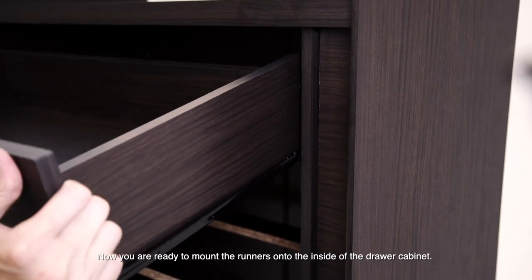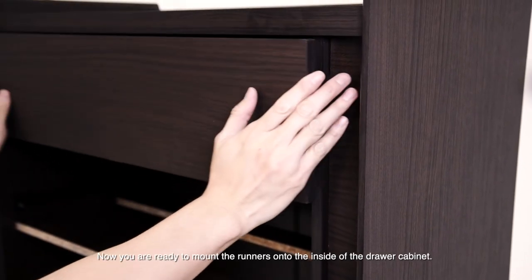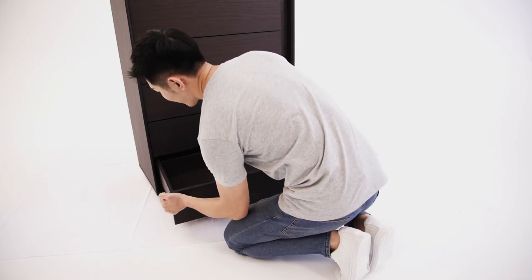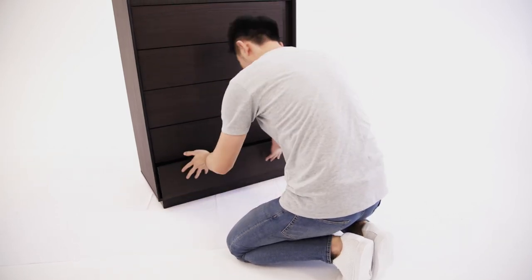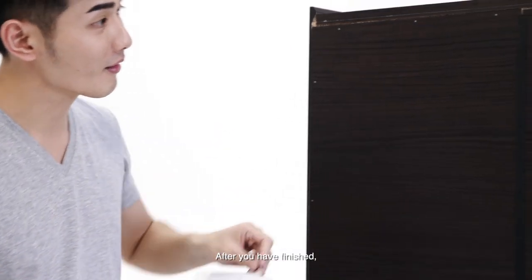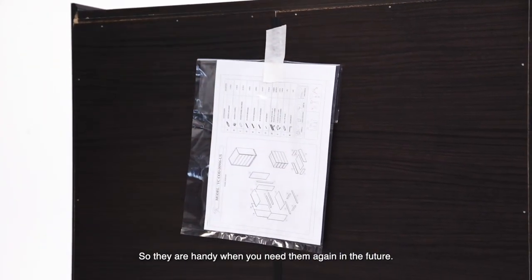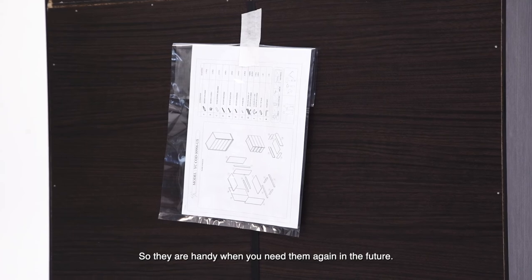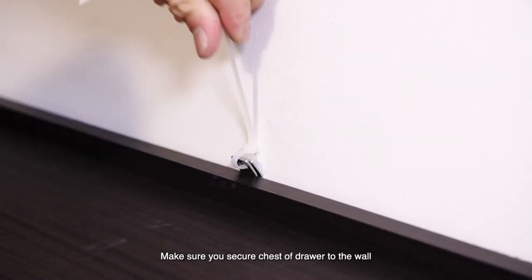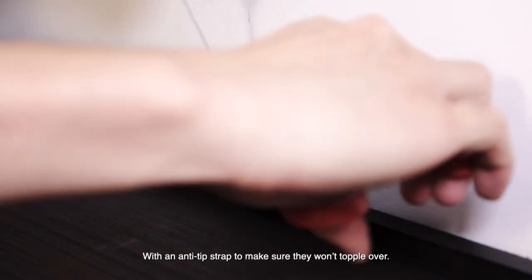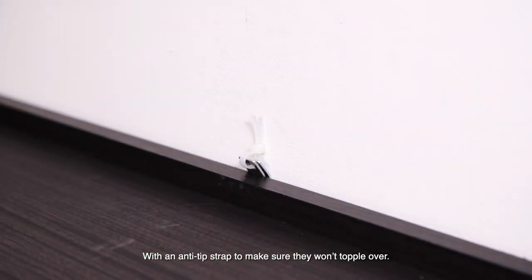Now you are ready to mount the runners onto the inside of the drawer cabinet. After you are finished, you can keep the instructions at the back of your furniture so they are handy when you need them again in the future. And finally, make sure you secure the chest of drawer to the wall with an anti-tip strap to make sure they won't topple over.